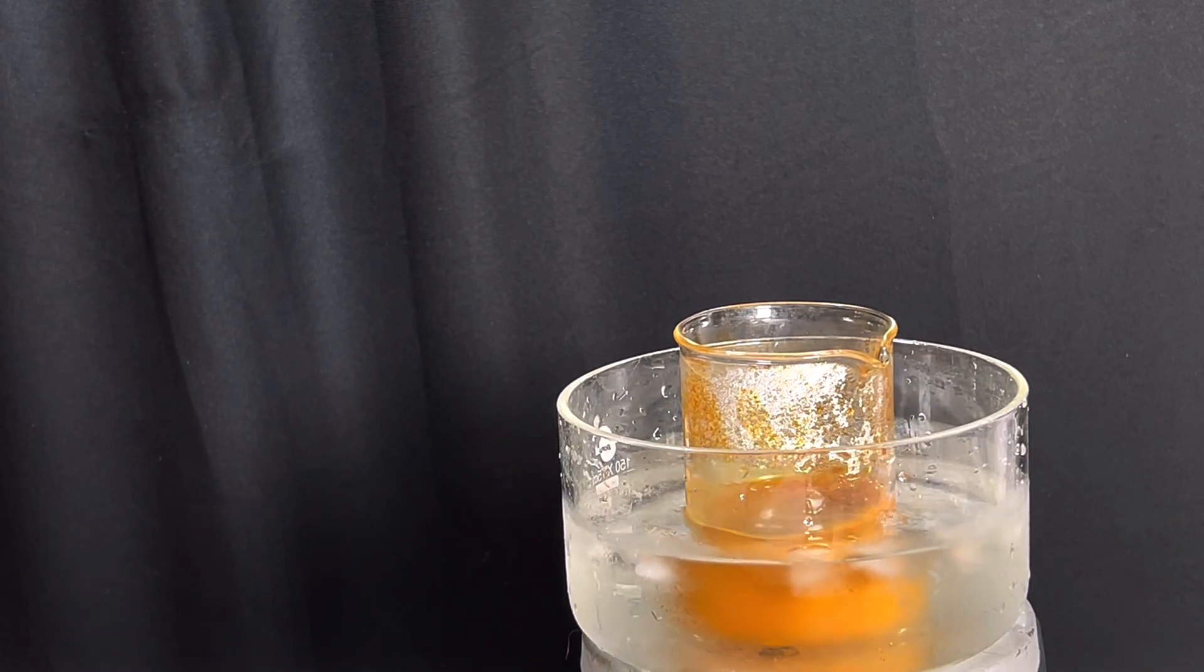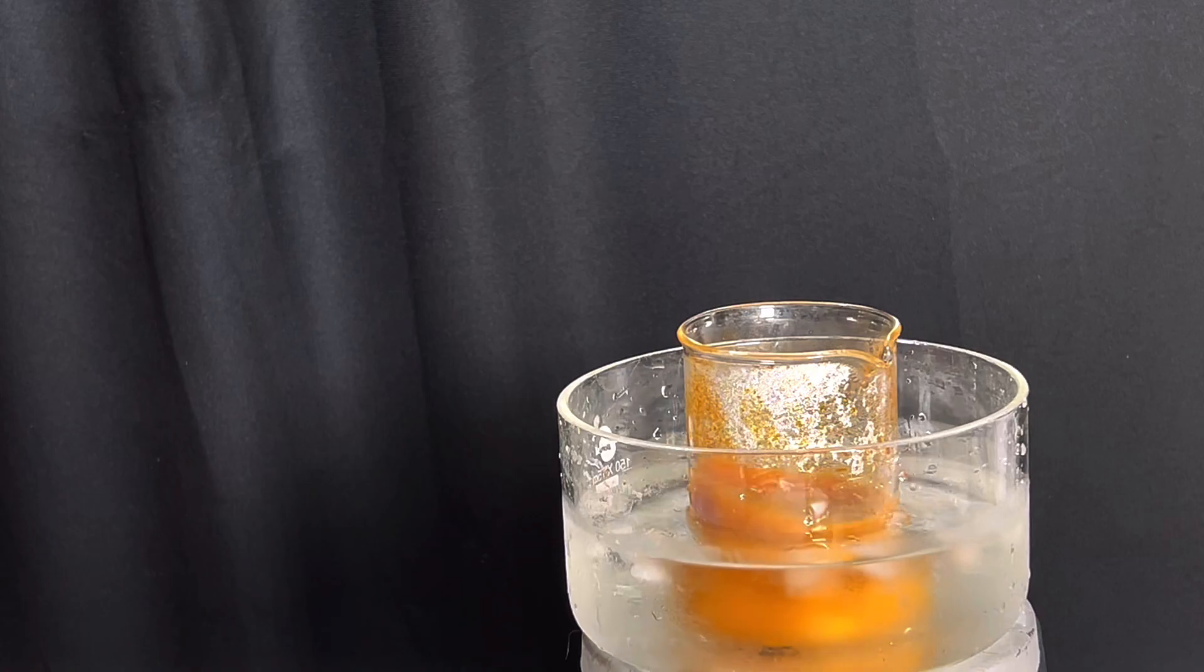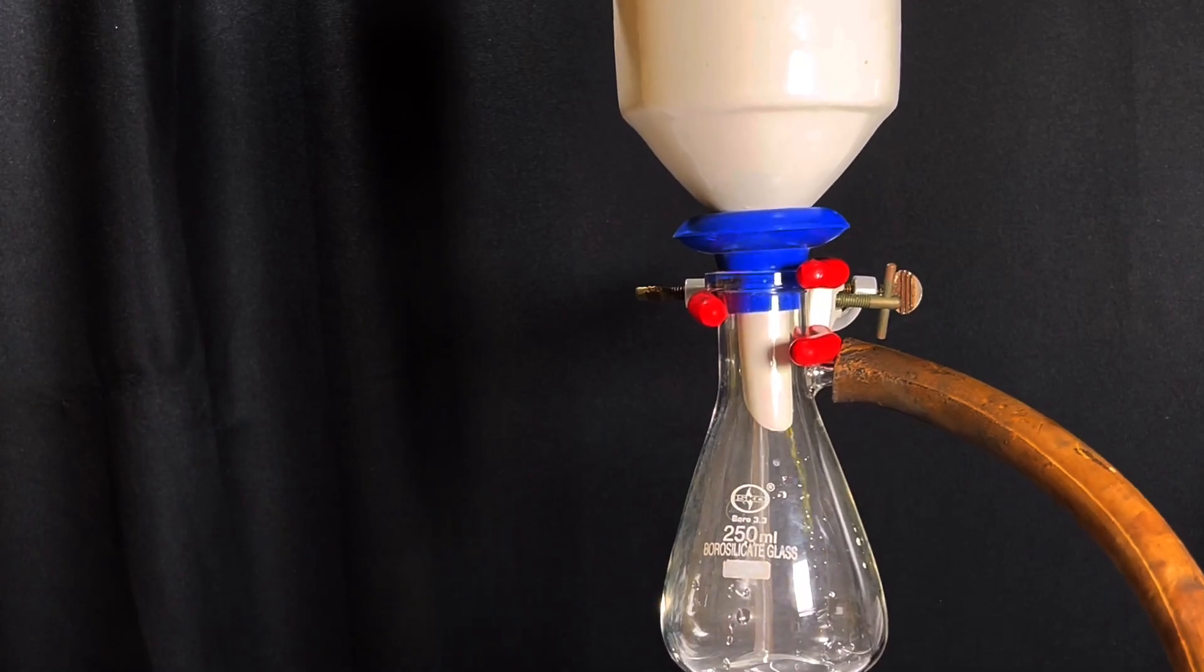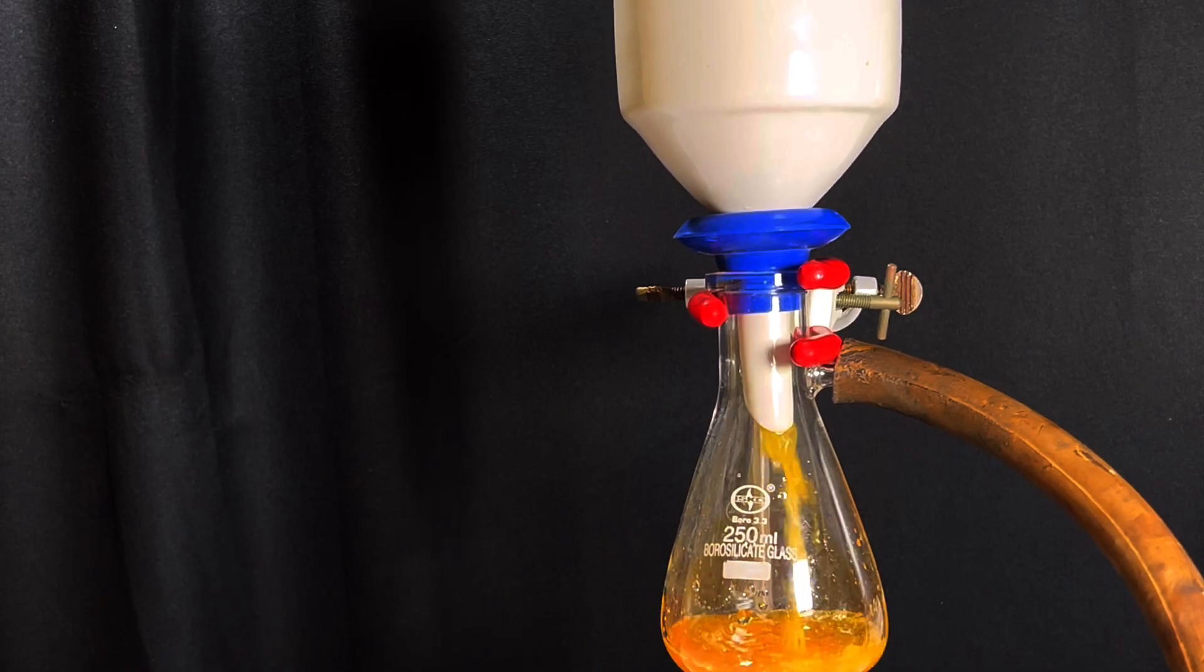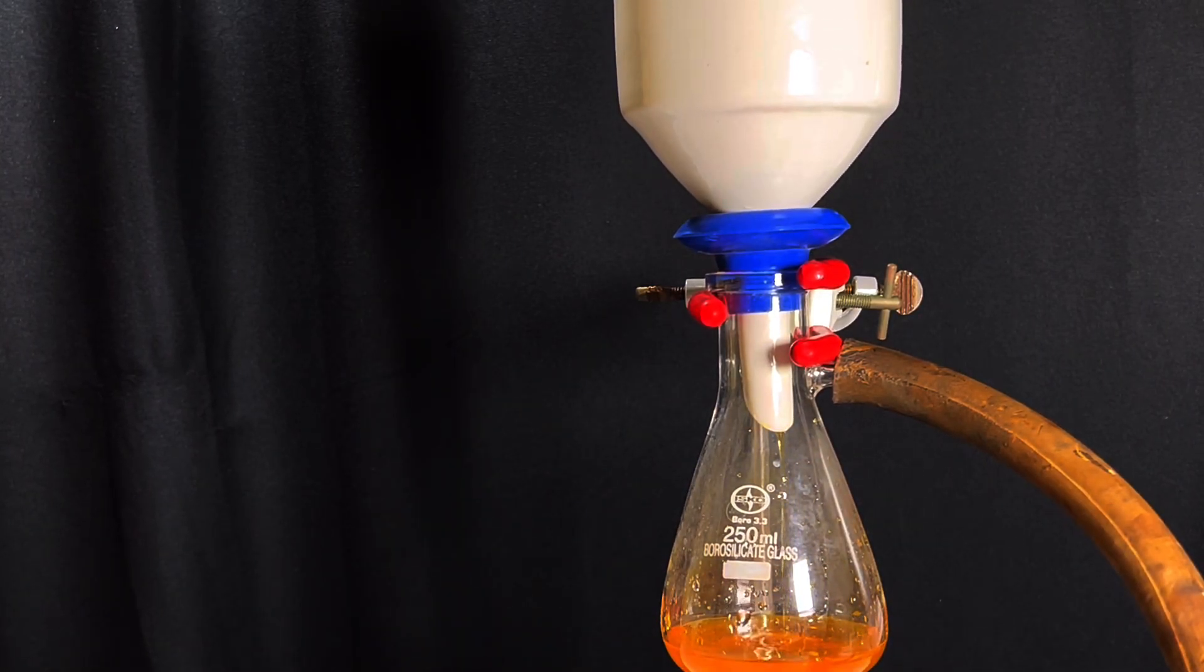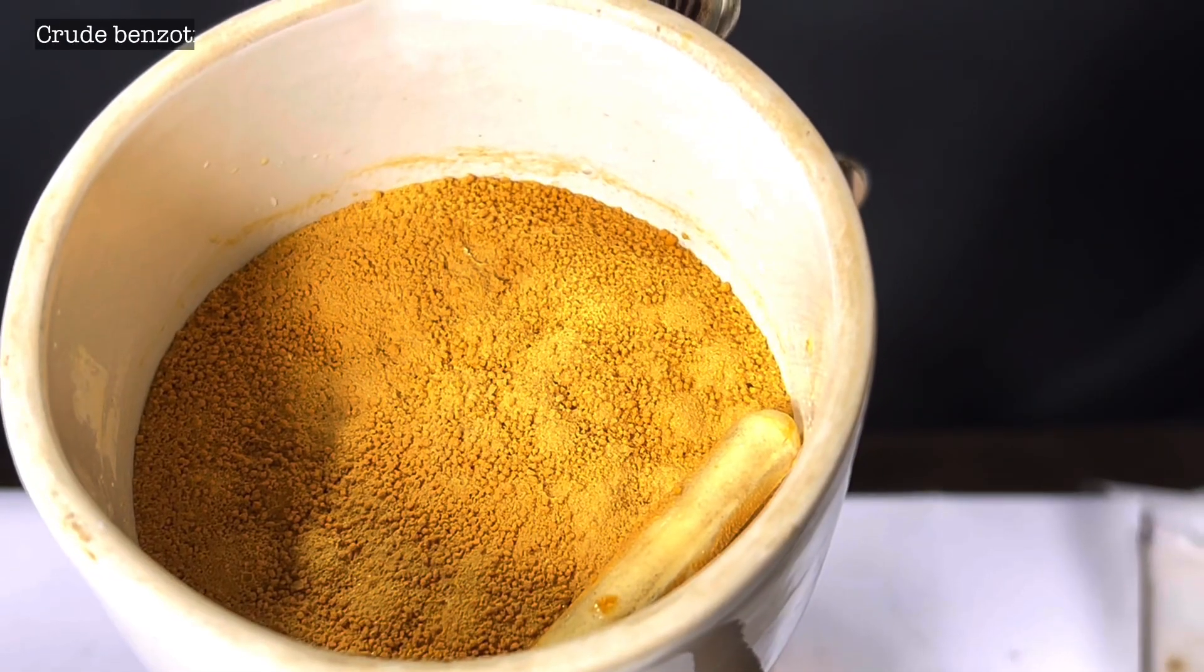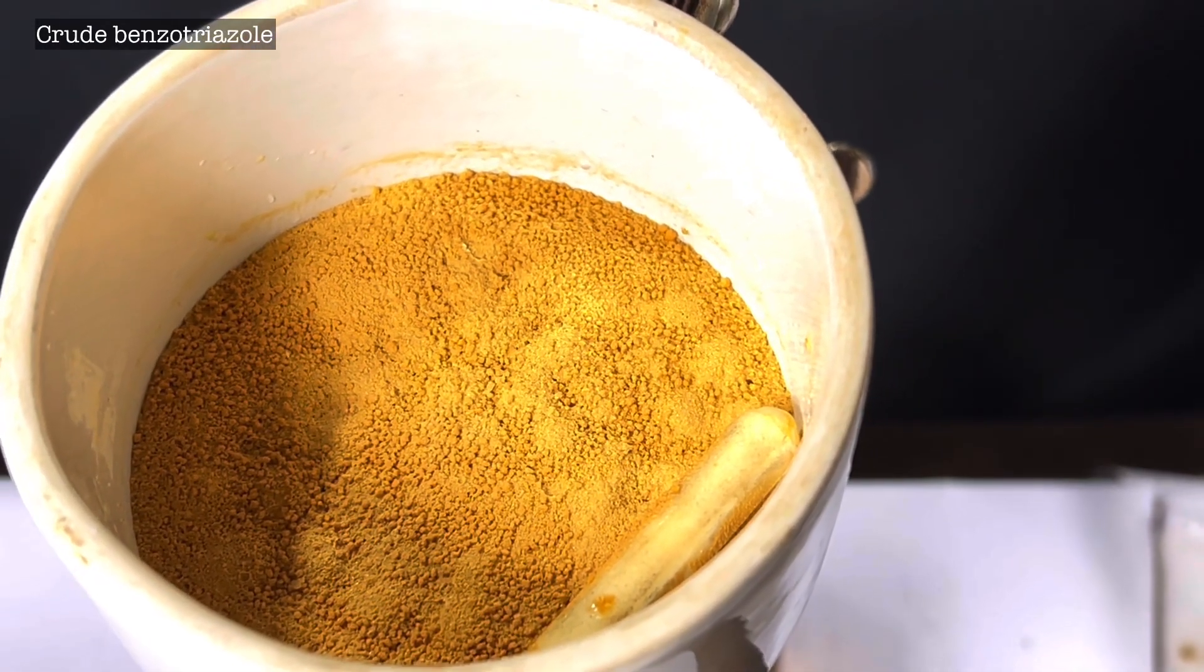The contents were then thoroughly mixed. The beaker was stirred at lower temperature and this causes the benzotriazole crude product to solidify from the viscous liquid. It was then vacuum filtered and dried. The crude product has a brownish yellow color.